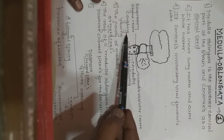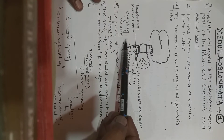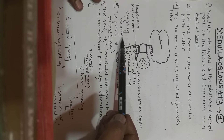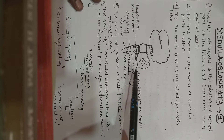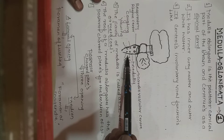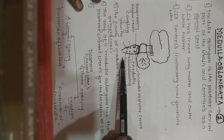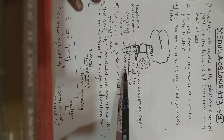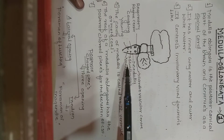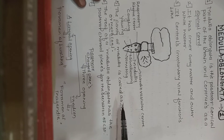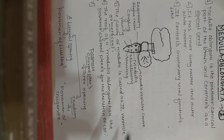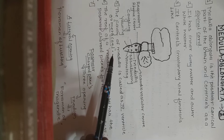Other centers in the medulla oblongata include the coughing center, yawning center, swallowing center — whatever you eat is swallowed through this — and the vomiting center. The cavity of the medulla is called the fourth ventricle.